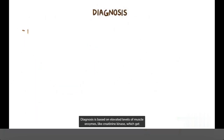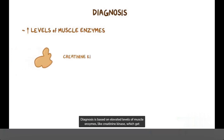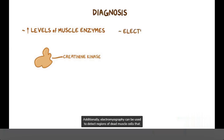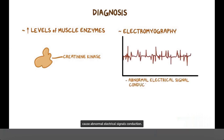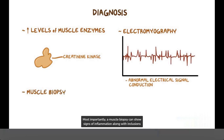Diagnosis is based on elevated levels of muscle enzymes, like creatinine kinase, which get released in the blood when myocytes are destroyed. Additionally, electromyography can be used to detect regions of dead muscle cells that cause abnormal electrical signal conduction. Most importantly, a muscle biopsy can show signs of inflammation along with inclusions, or vacuoles, of abnormal proteins.